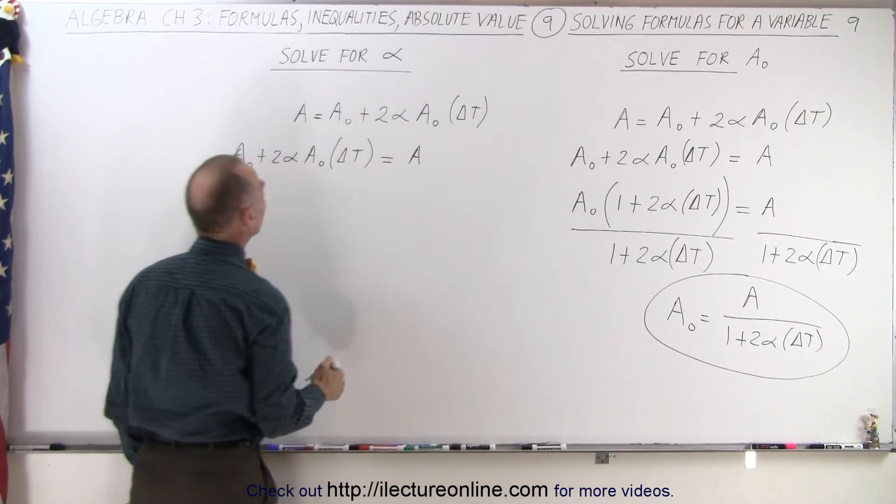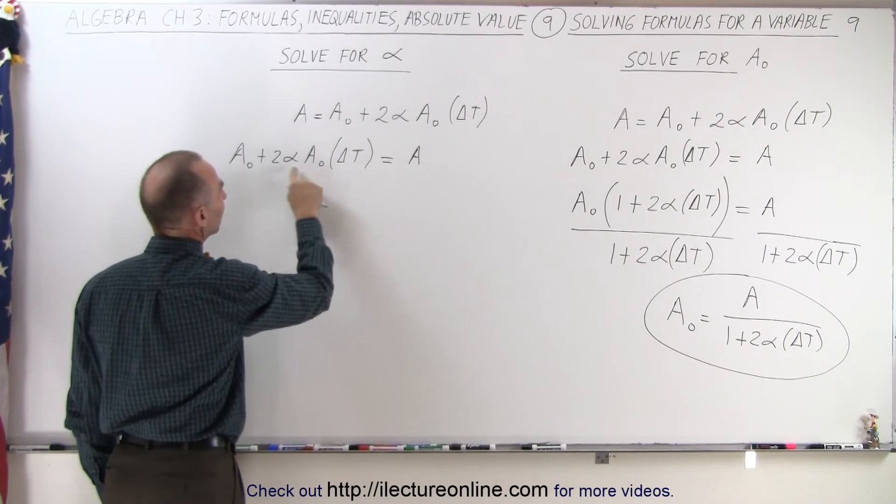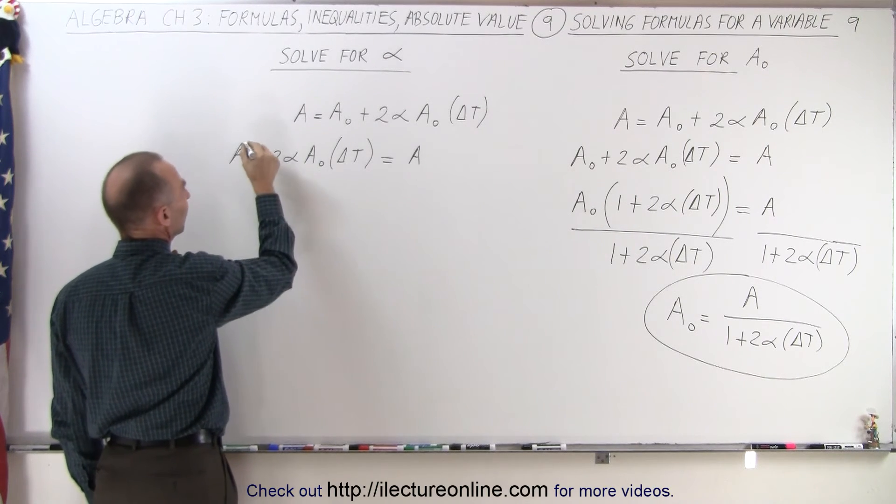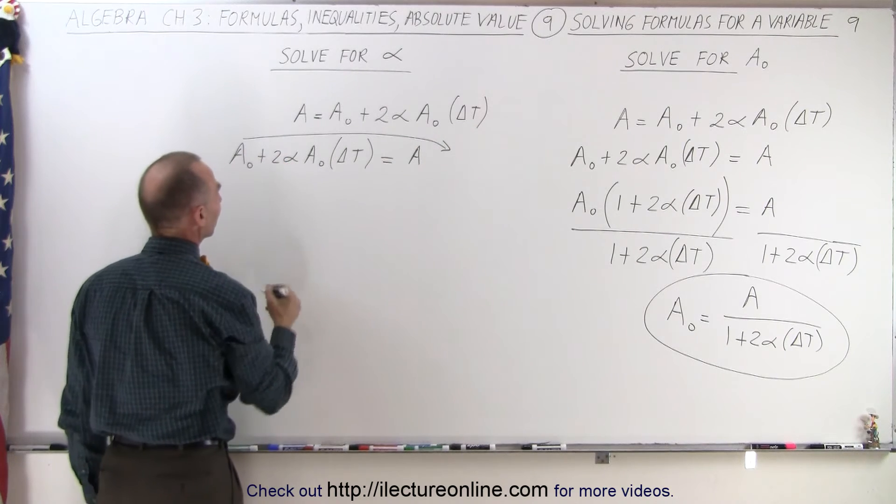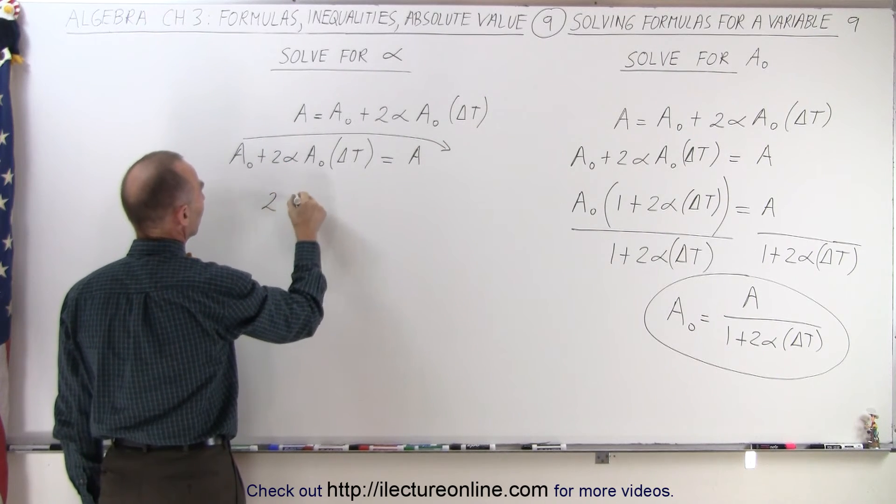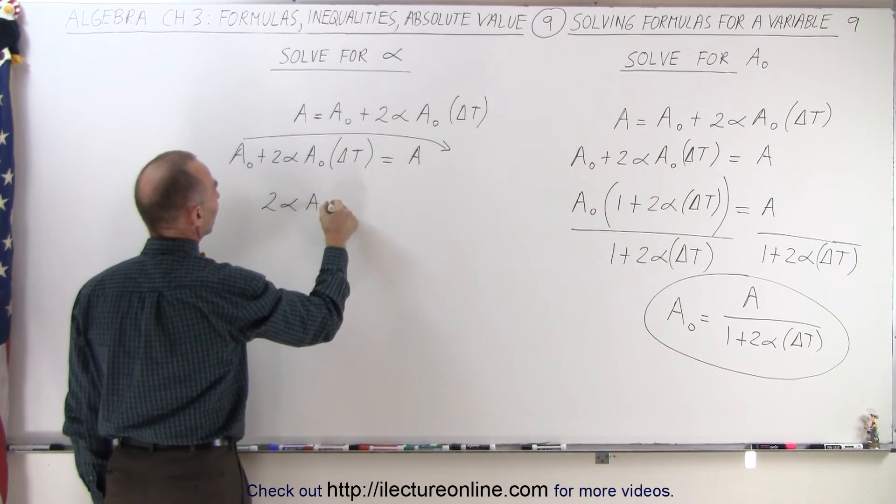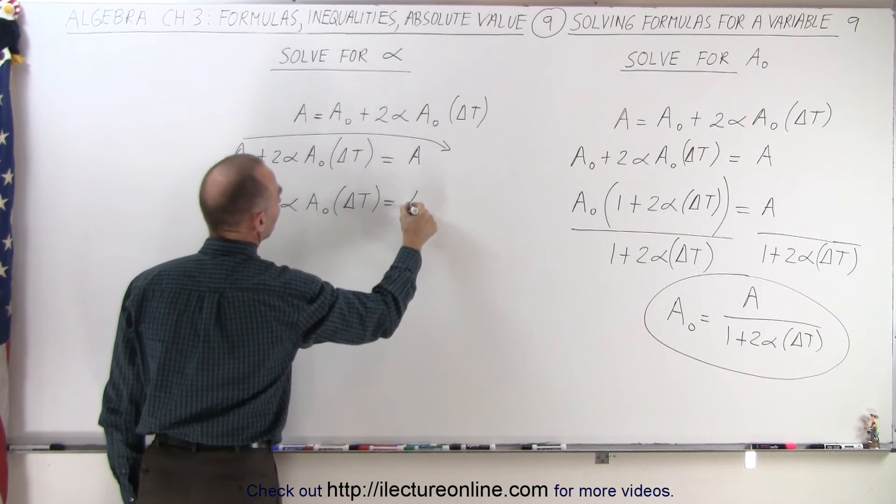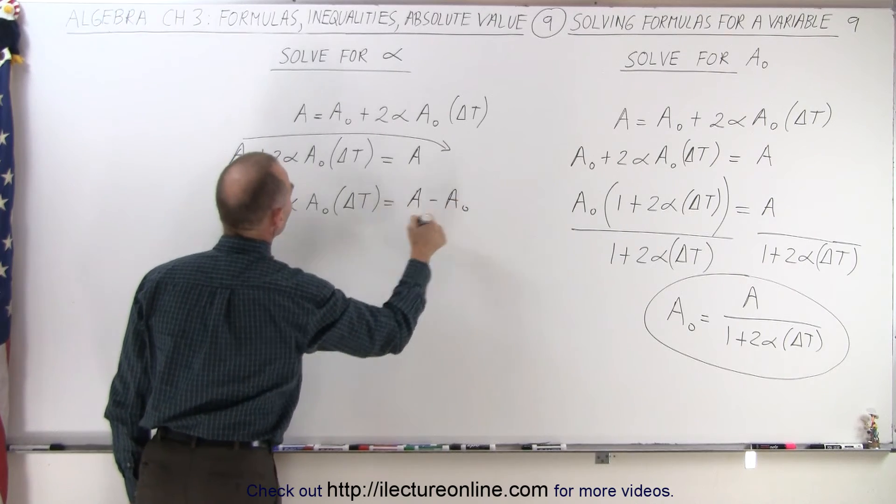But what's different now is I only have one term that contains alpha. I don't have an alpha in this term, so this term is now going to move to the other side of the equal sign. So on the left side, I end up with 2 alpha A sub nought times delta T is equal to A minus A sub nought.